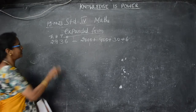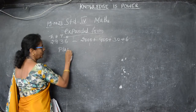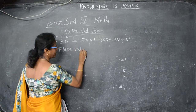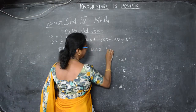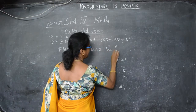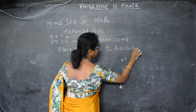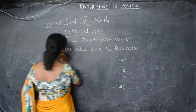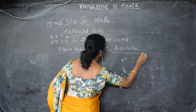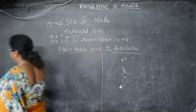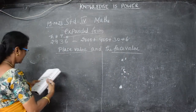Now we are going to see the place value and the face value. So what do you mean by the place value and the face value? Now we are going to see the place value of the numbers.